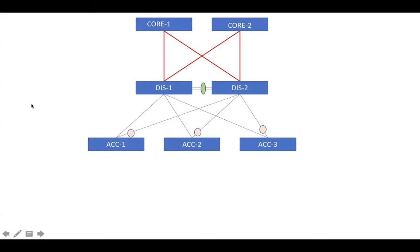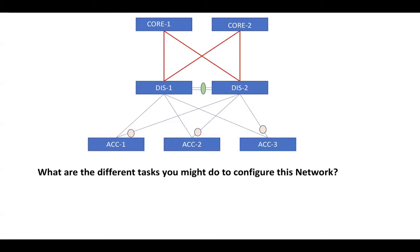Let me start with the first question: what are the different tasks we might need to do to configure this network? At a high level, we have to configure ports as access or trunk, configure VLANs, SVIs, layer 3 interfaces, HSRP, and routing protocols.